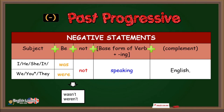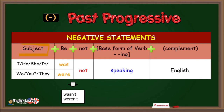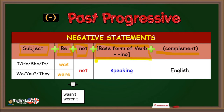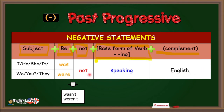In order to make negative statements, you must write first the subject, the verb to be, plus not, plus gerund, plus complement. Examples: I was not speaking English. She was not speaking English. We were not speaking English. They were not speaking English.